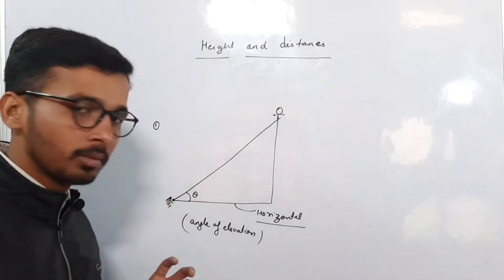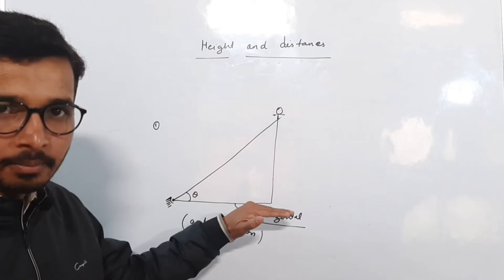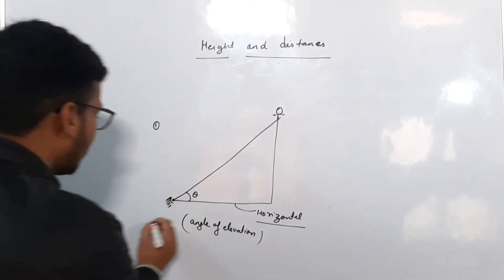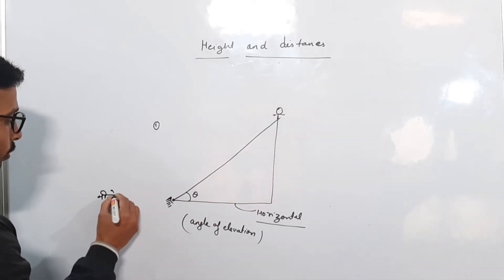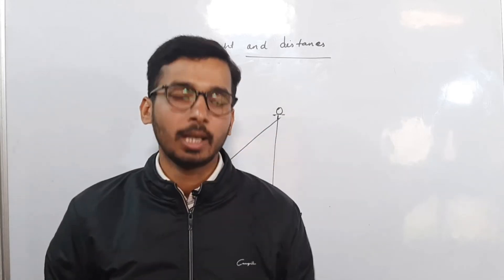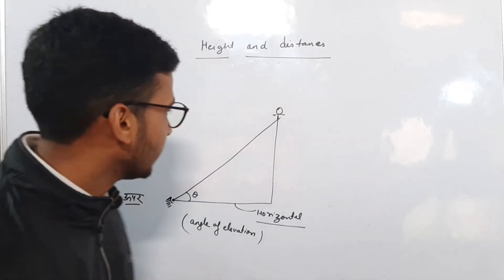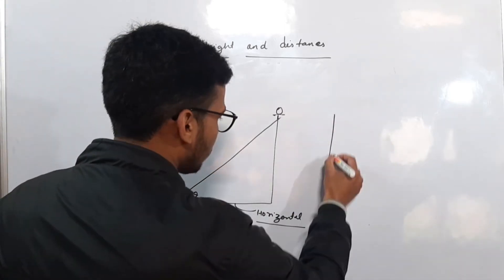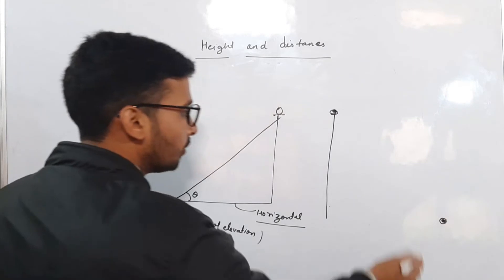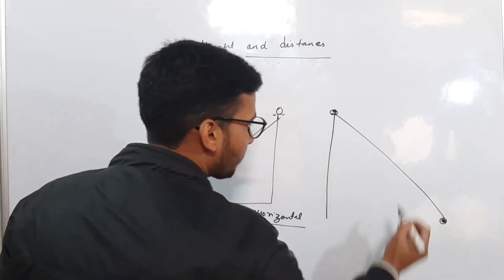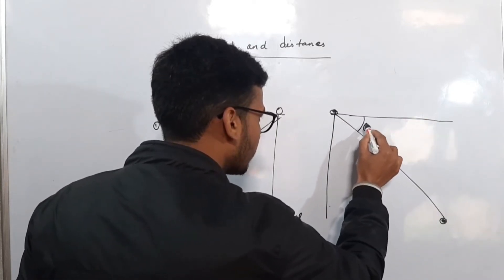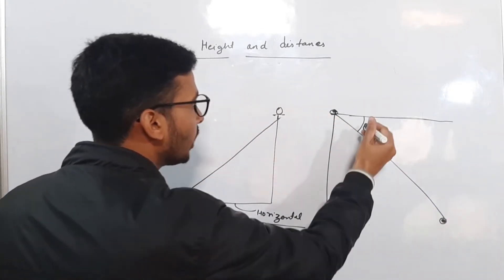The angle of elevation is the angle between the horizontal line and the line of sight when looking up. Now, if there is an object above and we are standing at a higher point looking downward, our eyesight will be horizontal, and there will be an angle formed below — this is called the angle of depression. The angle of depression is when we are at the upper side and looking downward at an object.